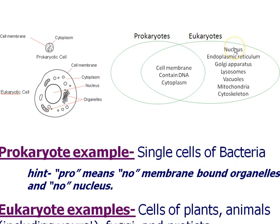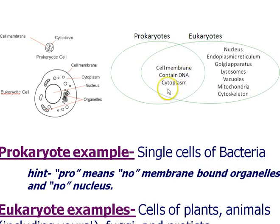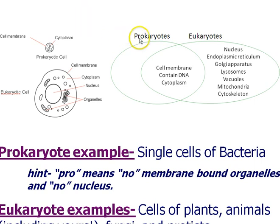Eukaryotic cells contain membrane-bound organelles like the nucleus that holds DNA, endoplasmic reticulum (both smooth and rough ER), Golgi apparatus, lysosomes, vacuoles, mitochondria, and cytoskeleton. Both prokaryotes and eukaryotes share some things in common: a cell membrane, DNA, cytoplasm, and ribosomes. Ribosomes, which make proteins, are also found in prokaryotes. Take a second to review the similarities and differences between prokaryotes and eukaryotes.